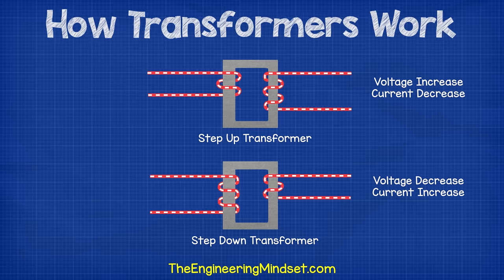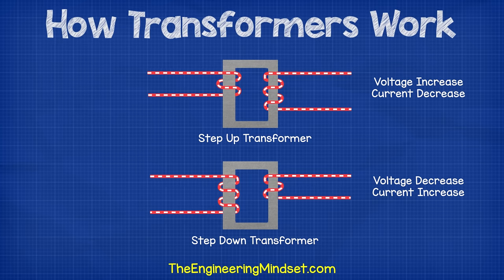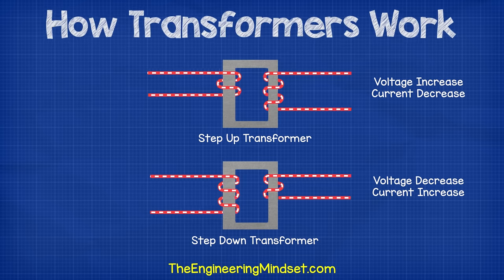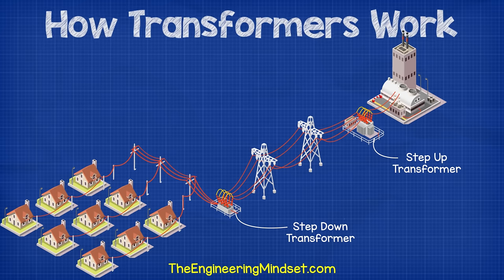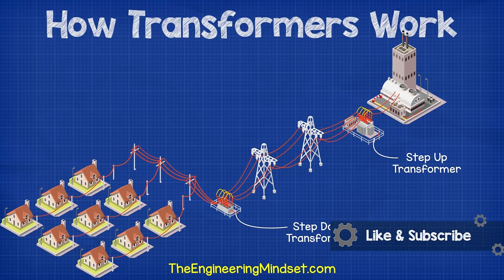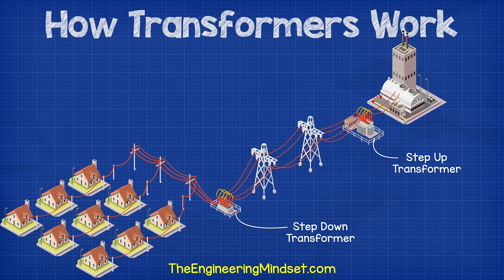In a step-down transformer, the voltage is decreased in the secondary coil, which means that the current increases. To do this, we just use fewer turns in the coil on the secondary side compared to the primary side. For example, a power station needs to transport the electricity it has generated over to a city some distance away. The power station will use a step-up transformer to increase the voltage and reduce the current, as this will reduce the losses through the long transmission cables.